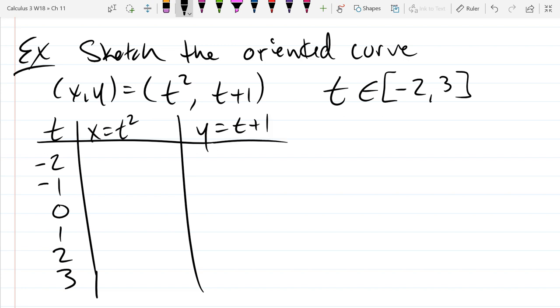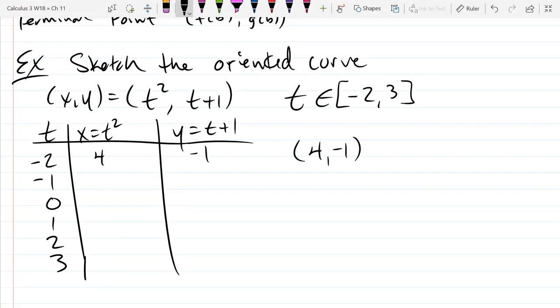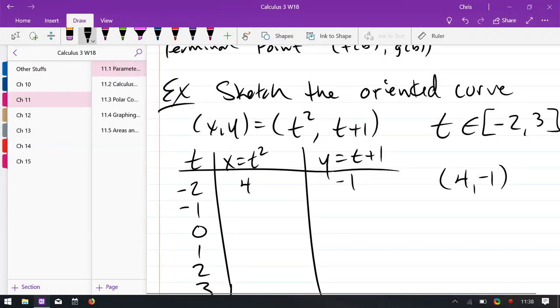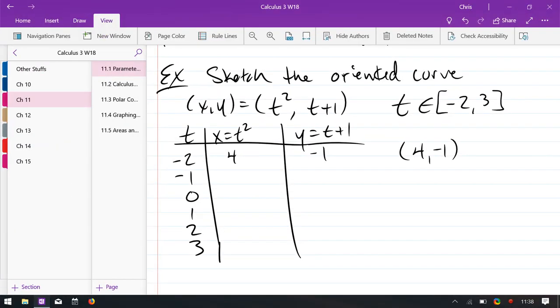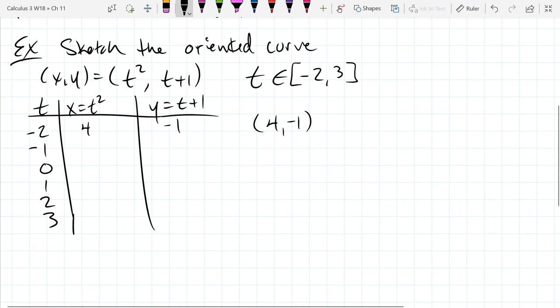This table is going to be a little bit different because your first column is t, which does not directly appear on the graph. Your graph is going to have x, y values, not t values. Good news is on these parameterized curves, you know your t values are between negative 2 and 3. I'm going to go with the integer values between negative 2 and 3. So we're going to go to negative 2, negative 1, 0, 1, 2, and 3. So x is t squared, and y is t plus 1. So fill in this chart. I'll do the first line. Negative 2 squared is 4. Negative 2 plus 1 is negative 1. So finish filling in this chart.